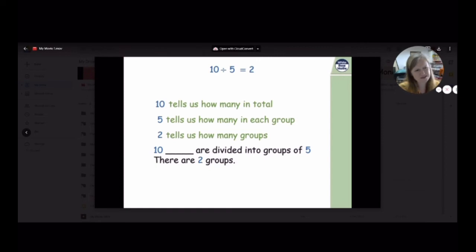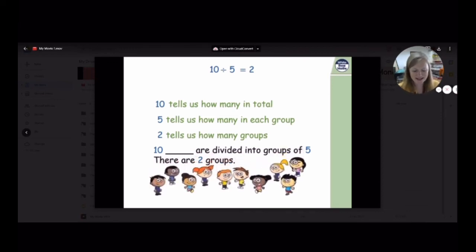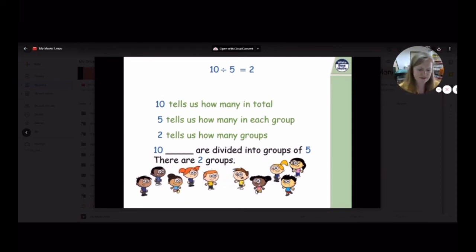What could we use as our somethings? Let's use children. Aha! Here are our 10 children. We've got 10 children and we're dividing into groups of five. Can five of you stand over to the left, please? Thank you. And the other group of five over to the right? Brilliant. We've got 10 children. They've been divided into groups of five and there are two groups.